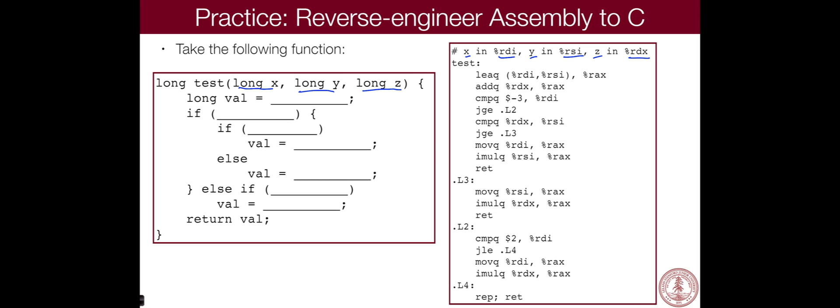So if you have a function with three parameters, the first one's going to go in RDI, second one's going to go in RSI, third one's going to go into RDX. All right, so that's where we start.